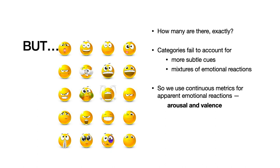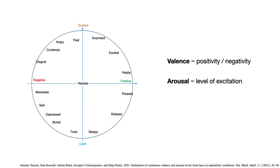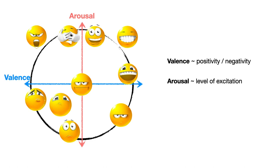We use continuous metrics for apparent emotional reaction recognition, called arousal and valence. Valence corresponds to the positivity or negativity of the displayed emotional reaction, whereas arousal corresponds to the level of displayed excitation. The picture on the left is borrowed from a cited paper and makes an attempt to link categorical apparent emotional reactions to these continuous metrics — this is by no means a strict mapping, just a suggestion. Here is an option that makes it a little more pictorial.